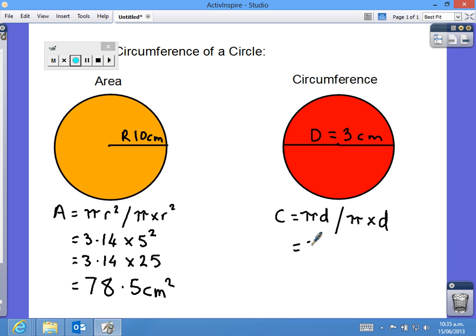So, we know that pi is 3.14 times the diameter, which is 3. 3 times 3.14 equals 9.42 centimeters, just measuring a distance.